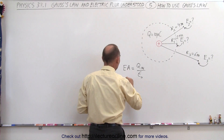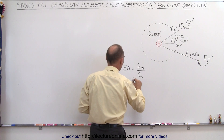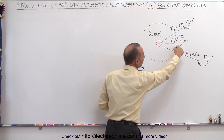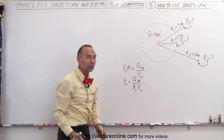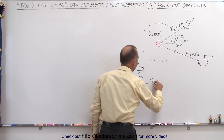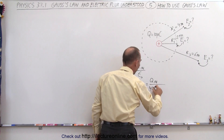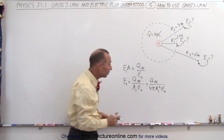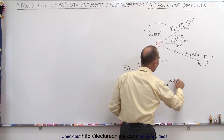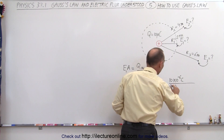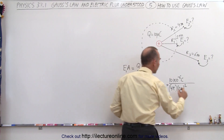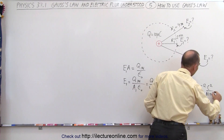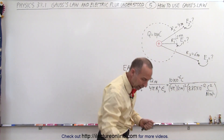We rearrange to get E1 equal to Q inside divided by A1 times epsilon sub nought. The subscript 1 indicates we're finding the electric field at the first location, and A1 is the surface area of that Gaussian sphere. That can be written as Q inside divided by 4π times R1 squared times epsilon sub nought. Plugging in the values: 10 times 10 to the minus 6 coulombs, divided by 4π, the radius is 2 meters squared, and epsilon sub nought is 8.85 times 10 to the minus 12 coulombs squared per newton meter squared.